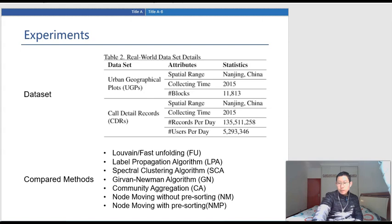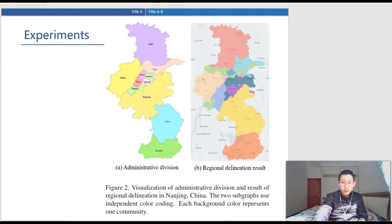Call detail records are separately counted according to different time ranges. The urban region is classified based on the administrative division of Nanjing, China, and the modularity is calculated as 0.6, which means that the original city has a relatively diverse community structure. The recognition results from our method have a modularity of nearly 0.7.